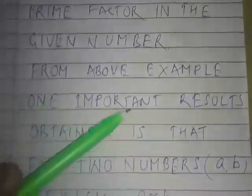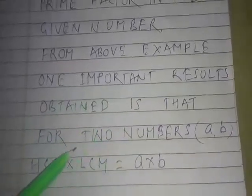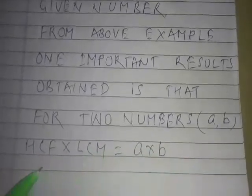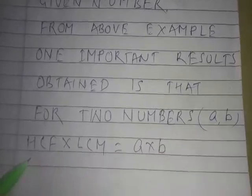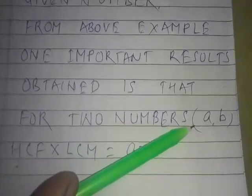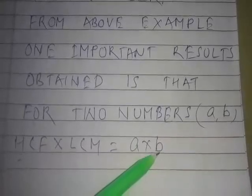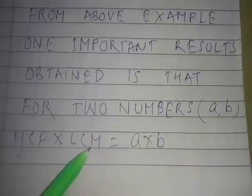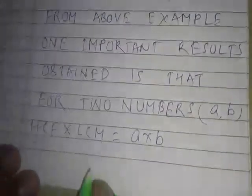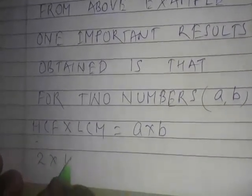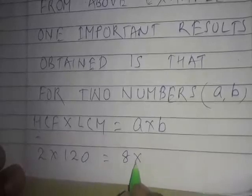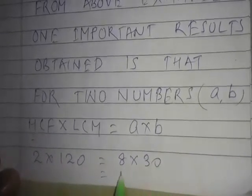From the above example, one more important result is obtained: for any two given numbers a and b, the product of their HCF and LCM equals the product of the two numbers themselves. You can verify it: 2 × 120 = 8 × 30; both equal 240.